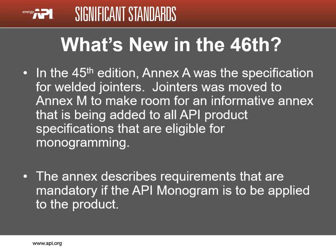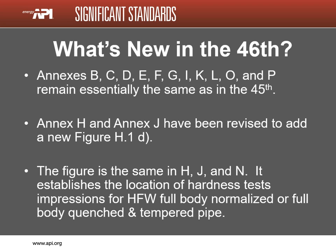Annex A used to be the location for welded jointers. The jointers annex has been reassigned to Annex M to make room for the new Annex A. API is in the process of adding an Annex A to all product specifications to show the link between the product specification and the API monogram program. This informative annex for licensees describes the requirements that become normative if the API monogram is to be applied to the product. Annexes B, C, D, E, F, G, I, K, L, O, and P are essentially unchanged.